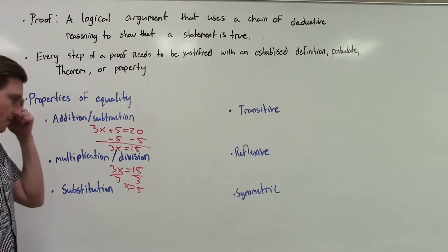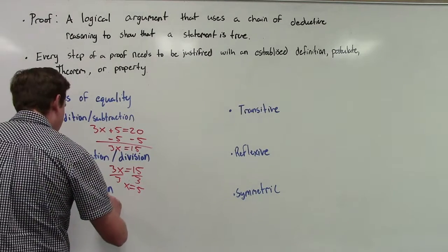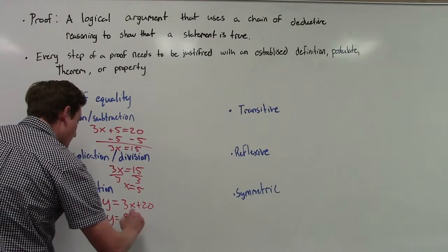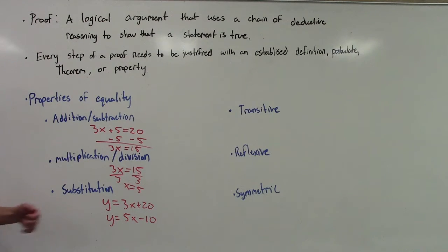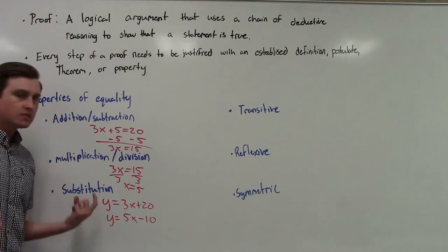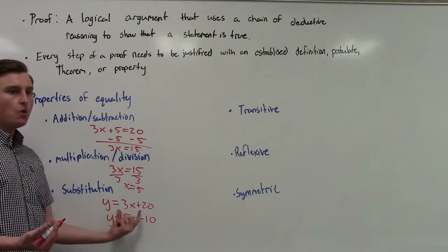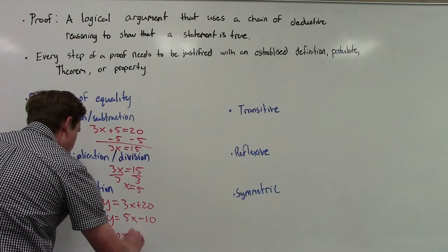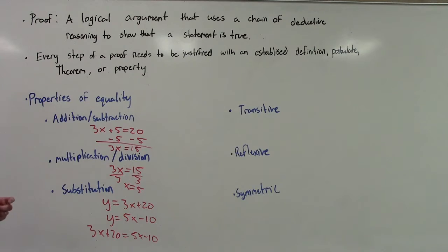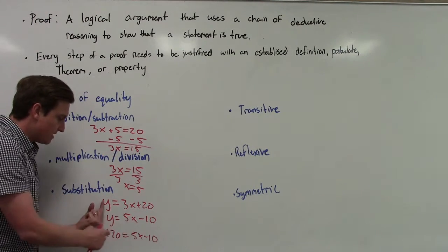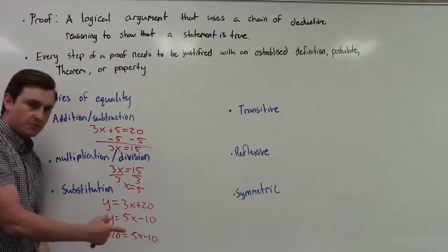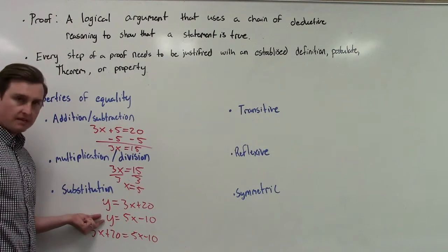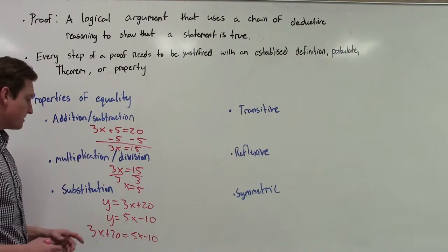The substitution property is one we use all the time. For example, if Y = 3x + 20 and Y = 5x − 10, then both quantities equal Y. Since they're both equal to Y, they must be equal to each other — so we can say 3x + 20 = 5x − 10. We can replace Y with either expression. Euclid calls this a common notion: things that are equal to the same thing are equal to each other. That's the substitution property — we can replace anything with something it's equal to and the statement stays true.